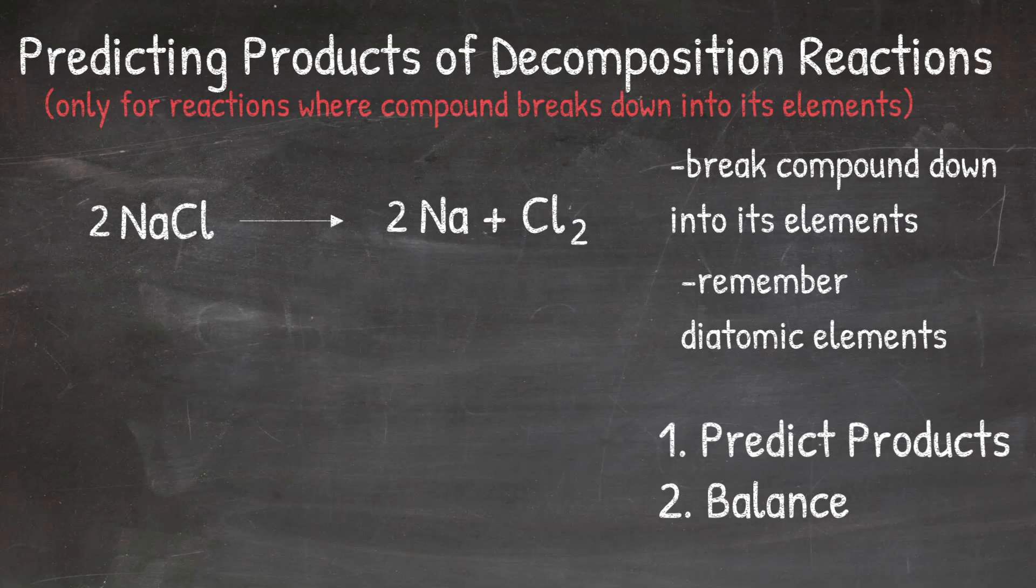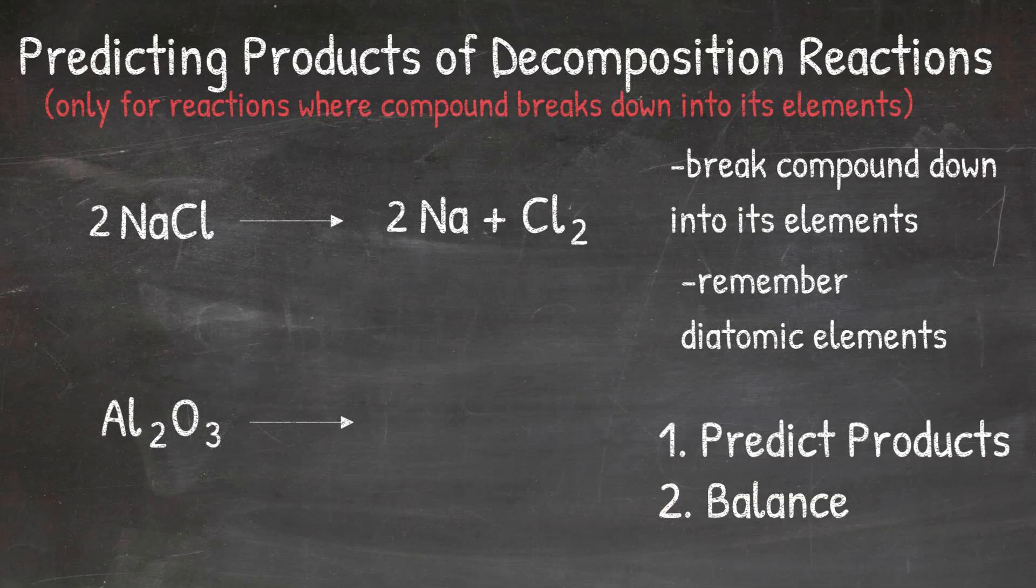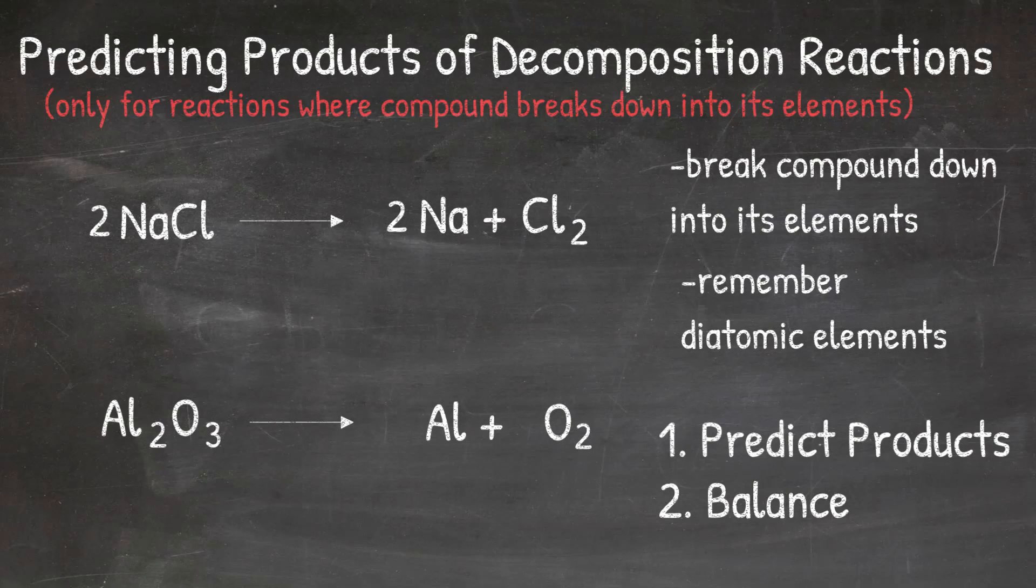In our second example, we will look at the reaction when Al2O3 breaks down into its elements. The two elements that make up Al2O3 are Al and O. I also have to remember to put a subscript of 2 on the oxygen because it is a diatomic element.